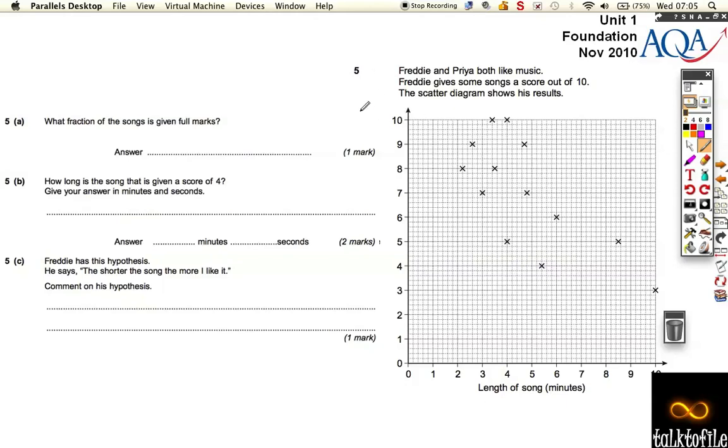Number 2010 paper. I've slightly reorganized it. The scatter graph comes first. I just had to fit it on the page. So, Freddie and Priya both like music. Freddie gives some scores, some song scores out of 10. The scatter diagram looks like this.